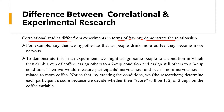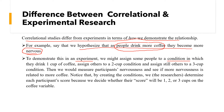For example, suppose we hypothesize that people who drink more coffee become more nervous. So there is a relationship between two variables: drinking coffee and nervousness. In an experiment, we might assign people to conditions — one group drinks one coffee per day, another drinks two coffees, and another drinks three coffees. So there are three conditions: one coffee, two coffee, and three coffee in a day.